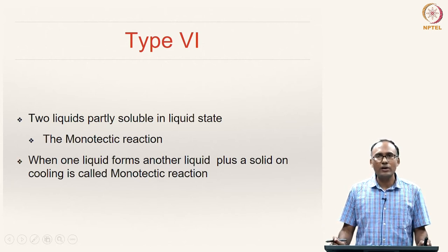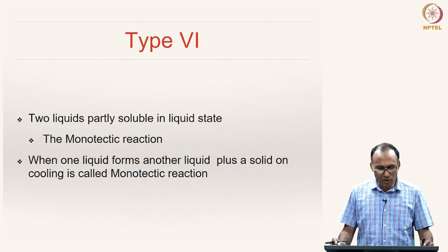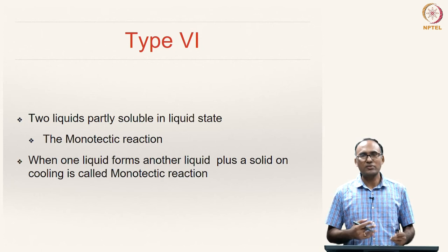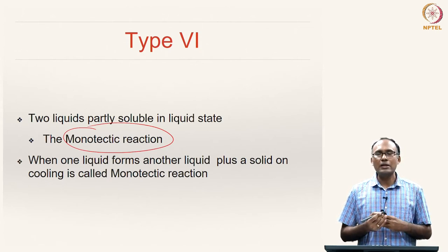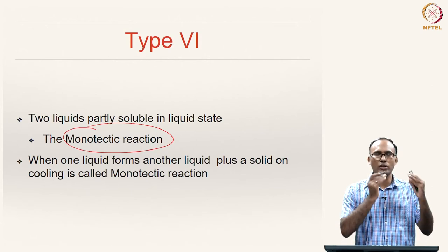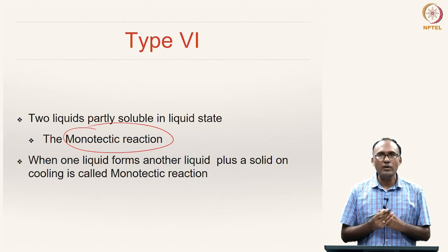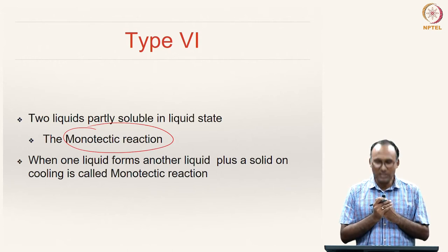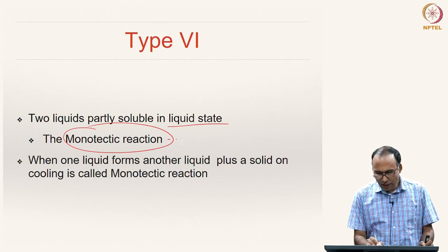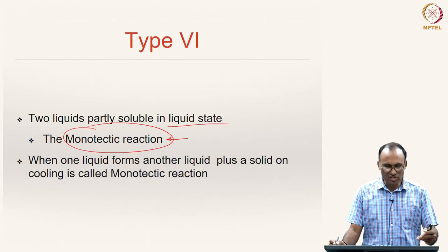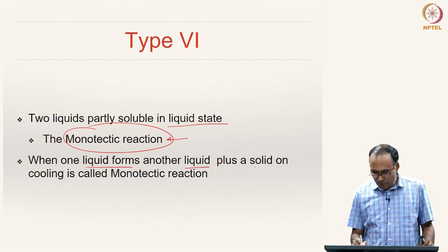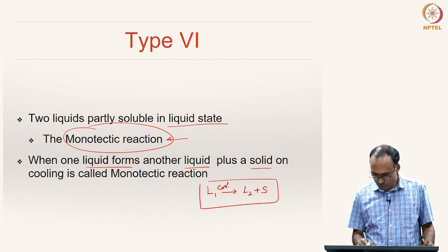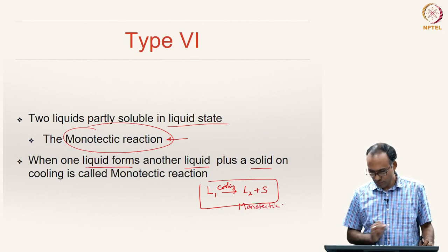That concludes Type 5 alloys with the peritectic reaction. Next we will look at Type 6 alloys, which involve another important reaction called the monotectic reaction. Type 6 alloys are classified by having partial solubility in the liquid state. Until Type 5 we had complete solubility in the liquid state; Type 6 gives an example of a system with partial solubility in the liquid state. Two liquids are partially soluble in each other, and this gives a special reaction called the monotectic reaction. The monotectic reaction is when one liquid transforms to another liquid plus a solid: liquid₁ → liquid₂ + solid upon cooling.